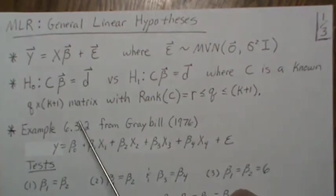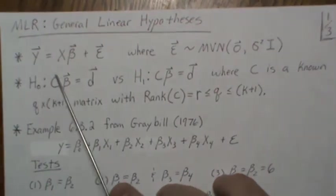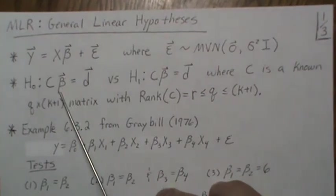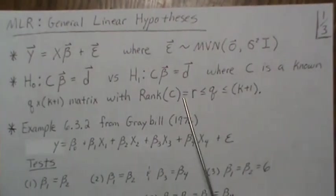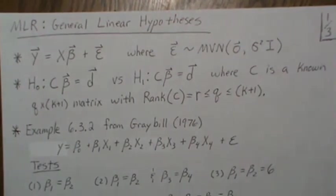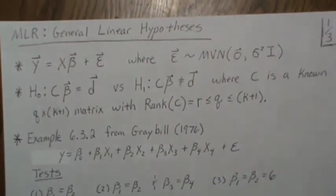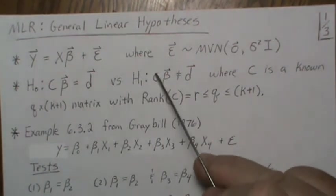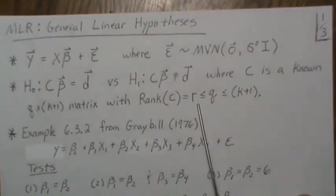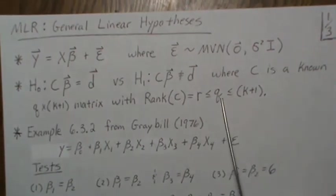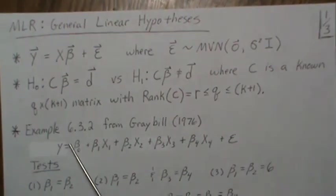The general linear hypothesis is C*beta = D, where C is a matrix, beta has k+1 parameters, and D is some known constant. The alternative is that it is not equal to D. C is a known Q by (k+1) matrix. The rank of C we'll call R, which can equal Q or be less than Q, and Q is less than k+1.